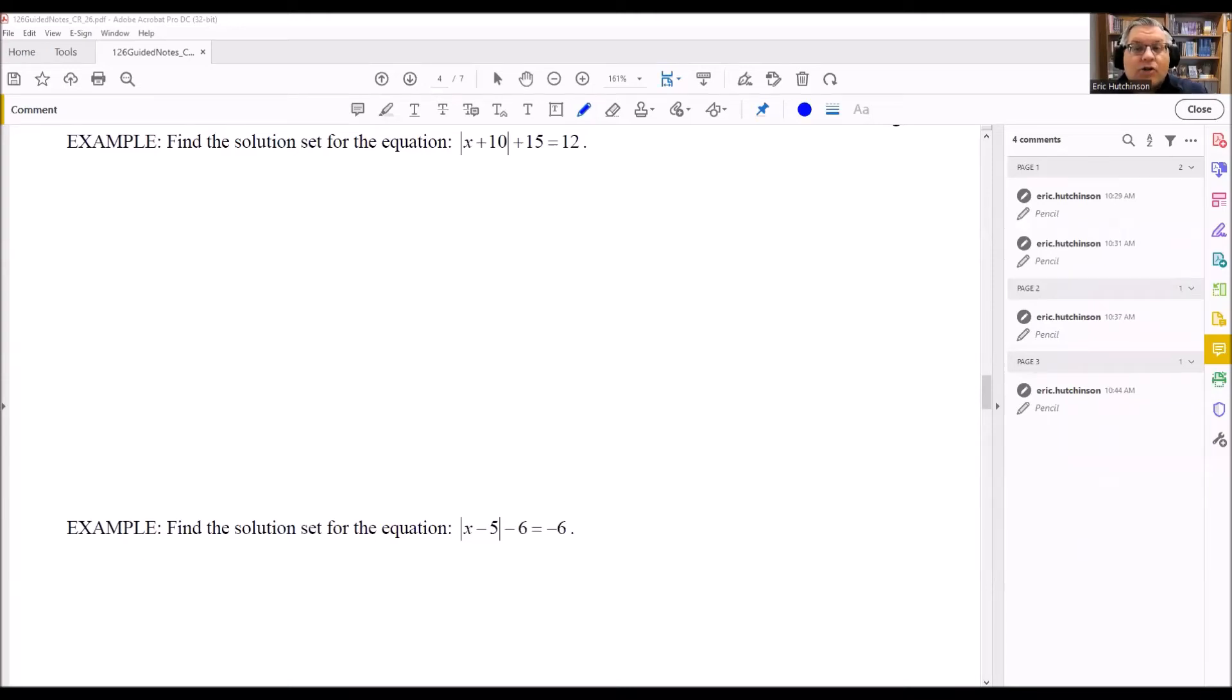We're going to do three problems, and all three of them are going to have different results as far as the number of solutions. So when you do these absolute value problems, it's possible you could have two solutions, one solution, or no solutions. We're going to take a look and do an example of each kind.